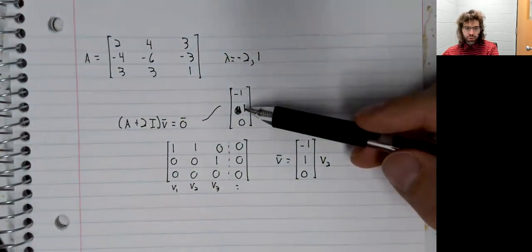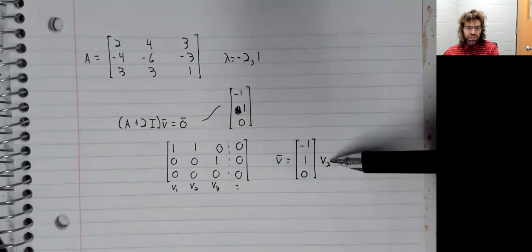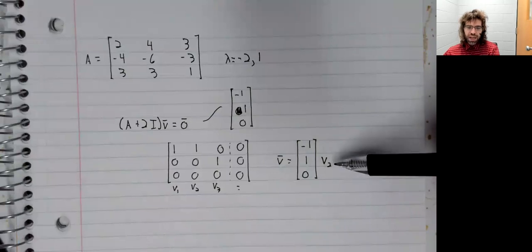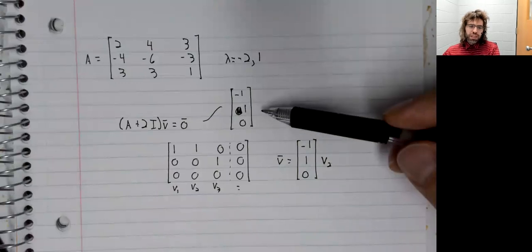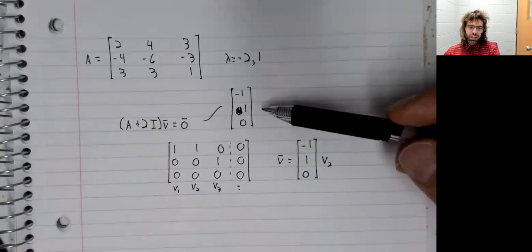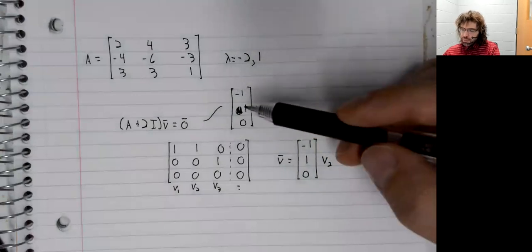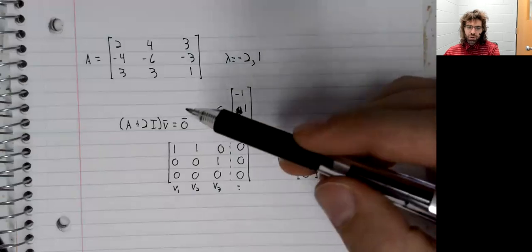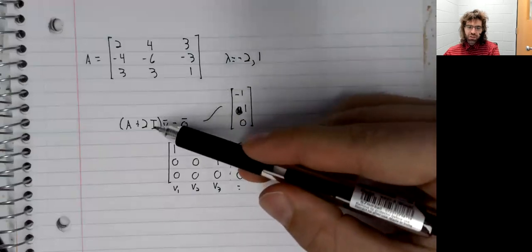So this eigenvector, for example, we get by letting V2 be one. If we let V2 be something else, three or seven or negative one half, we'd get another eigenvector, but it would be a constant multiple of this, and therefore not linearly independent. So we only get one linearly independent eigenvector from this eigenvalue.